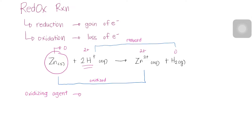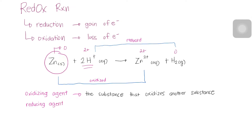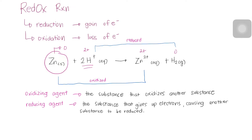The substance that oxidizes another substance is called an oxidizing agent or oxidant. The oxidizing agent acquires electrons from the other substance and so it is itself being reduced. On the other hand, a reducing agent or reductant is a substance that gives up electrons, thereby causing another substance to be reduced. The reducing agent is therefore oxidized in the process.